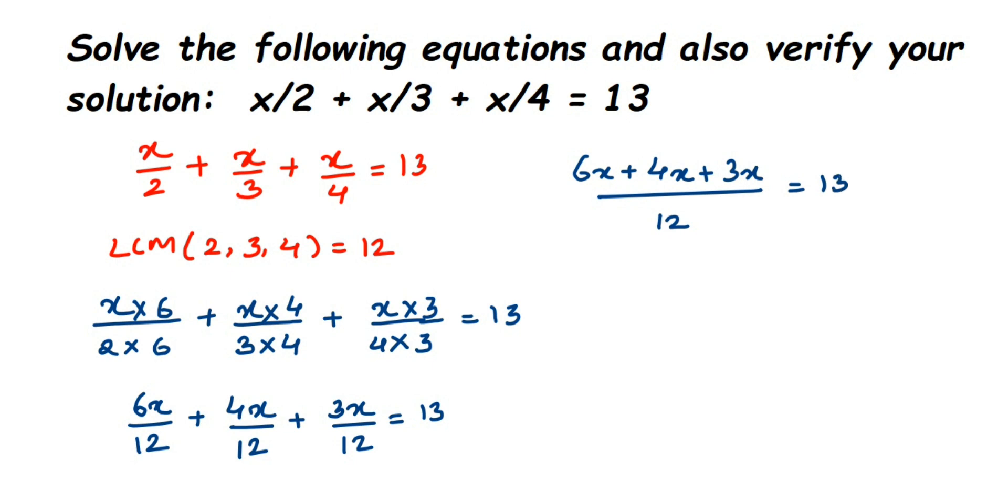6 plus 4 is 10, 10 plus 3 is 13, so we'll get 13x/12 = 13. Now we want only the x value, so transpose 12. 12 is in multiplication, so when you transpose it comes in division: x = 13 × 12. Now 13 is in multiplication, when you transpose it comes in division: x = (13 × 12)/13. Cancel 13 and 13, we'll get 12. Therefore, x = 12.